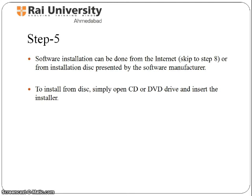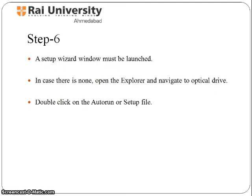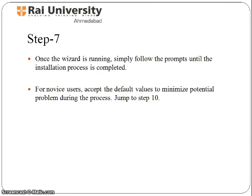To install from disk, simply open the CD or DVD drive and insert the installer. Then launch the setup wizard, or open the file explorer and navigate to the optical drive. Click on the setup file. When the wizard is running, simply follow the prompts until the installation process is completed.